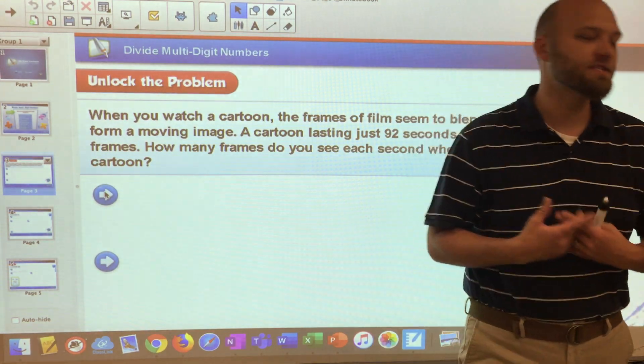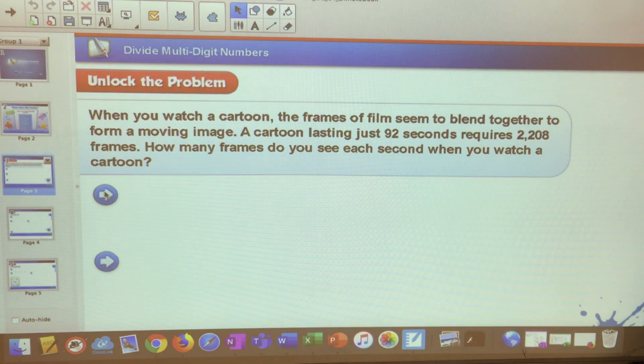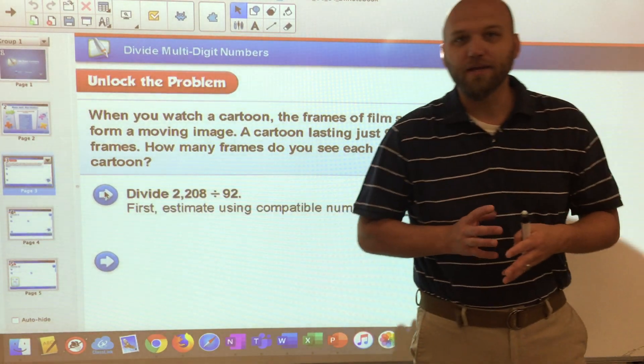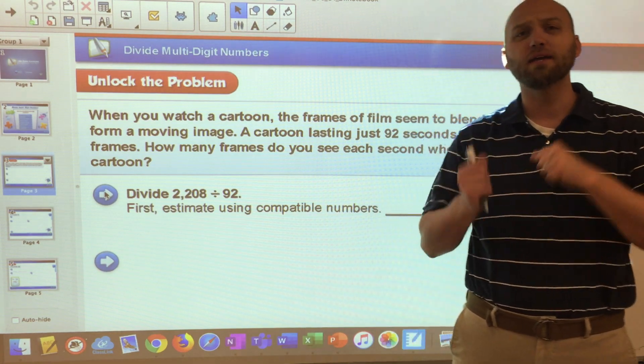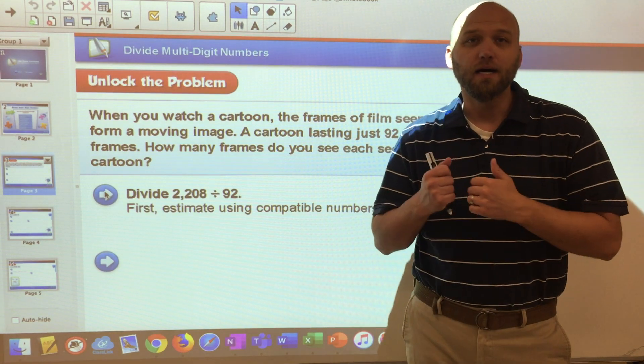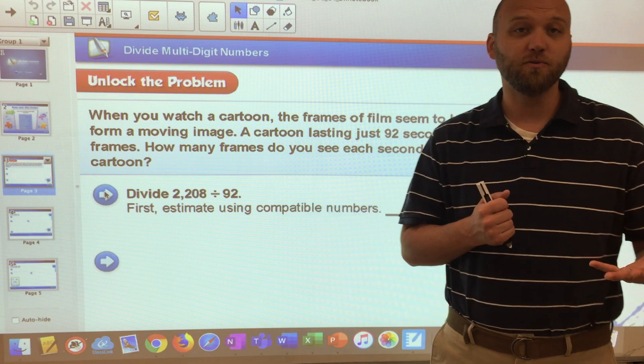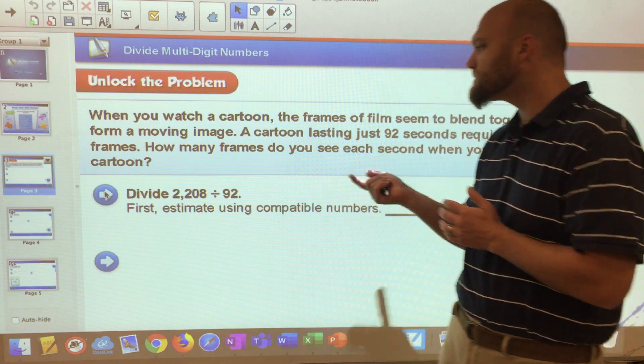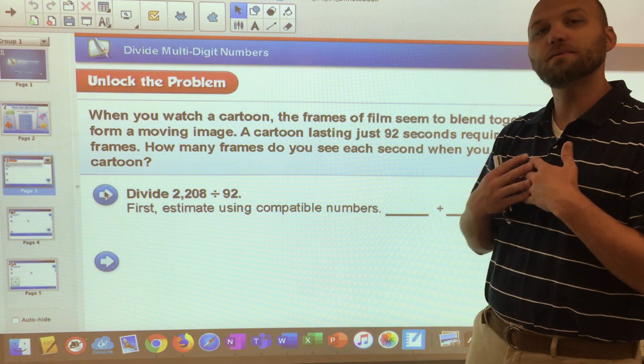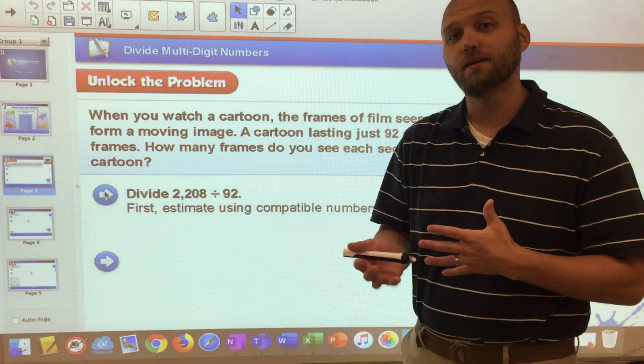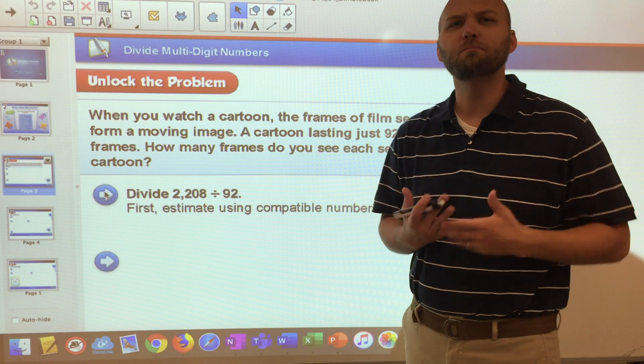The first step that we like you to take is to estimate. And the reason that we estimate is so that we have some idea that we're in the ballpark. This is a really easy way to check for decimal placement, which is one of the most common things that people make mistakes on. So if we're dividing 2,208 by 92, what are some numbers that are relatively close to that, that we could use just to do a little mental division?